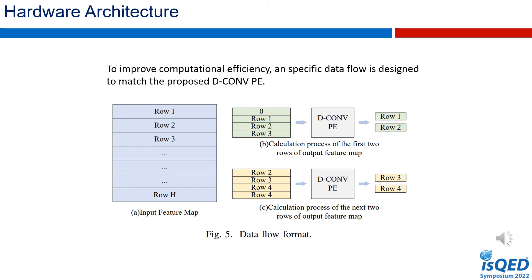The padding zero and the first three rows of the input feature map form four rows of data, and the four activations in the vertical direction are sent to D-COMPE for calculation in each cycle. Two rows of output feature maps are generated as shown in Fig. C. When the current two rows of output feature maps are calculated, the input activations are from rows 2 to 4, which is similar to the kernel sliding two rows in the vertical direction on the feature map.